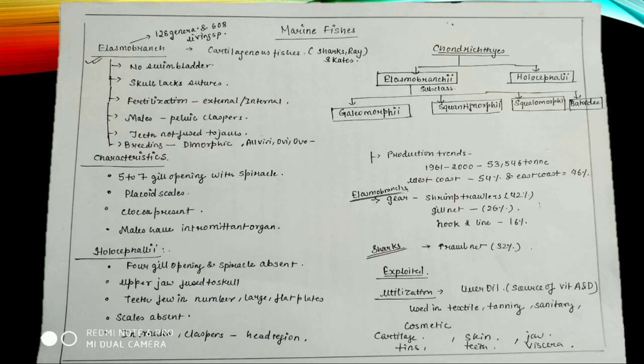The super orders are Galeomorphi, Squalomorphi, and Batoidea. These are the super orders of Elasmobranchii. So we will study here first the characteristics of Elasmobranchii.